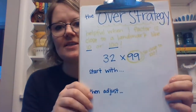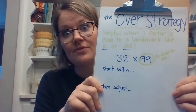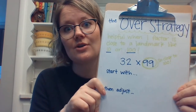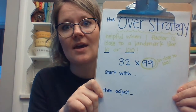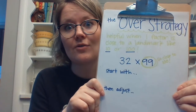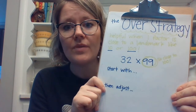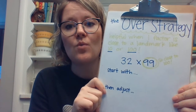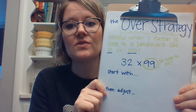We can solve it in a different way if we understand what multiplication is asking us to do. I'm going to talk about the over strategy — this is a strategy we've talked a lot about in class. Your students have had experience with it both in fourth grade and possibly even in third grade when learning math facts.